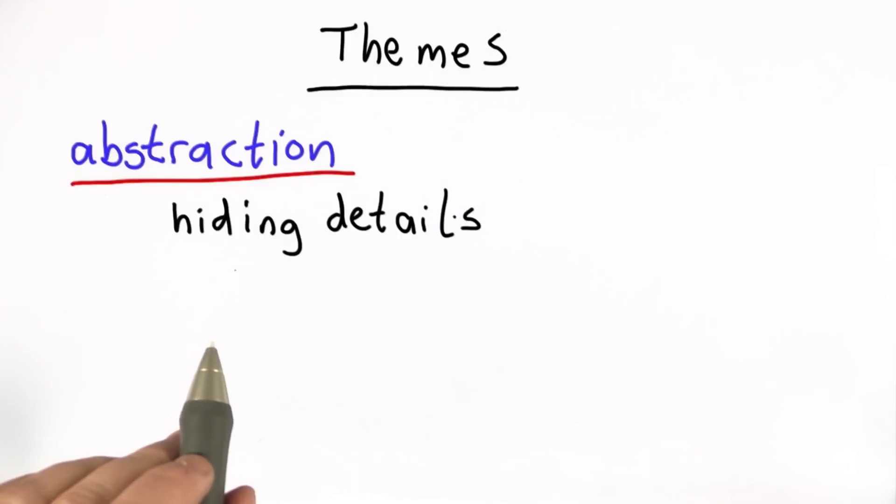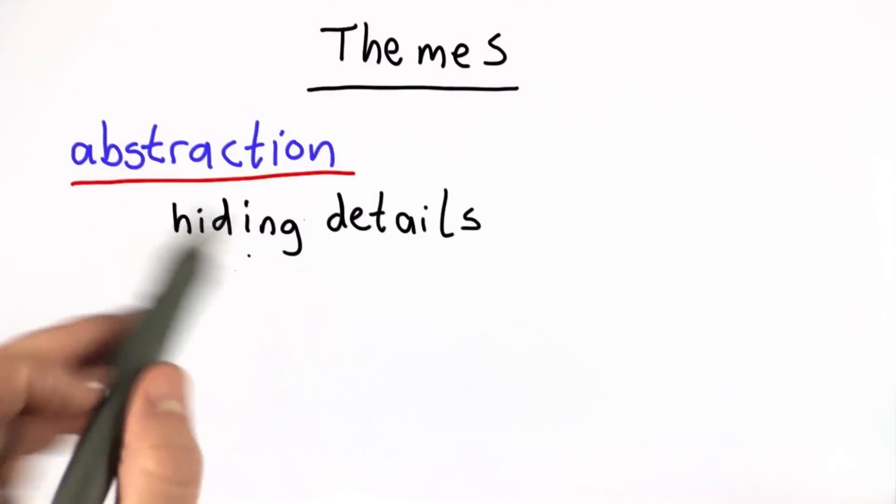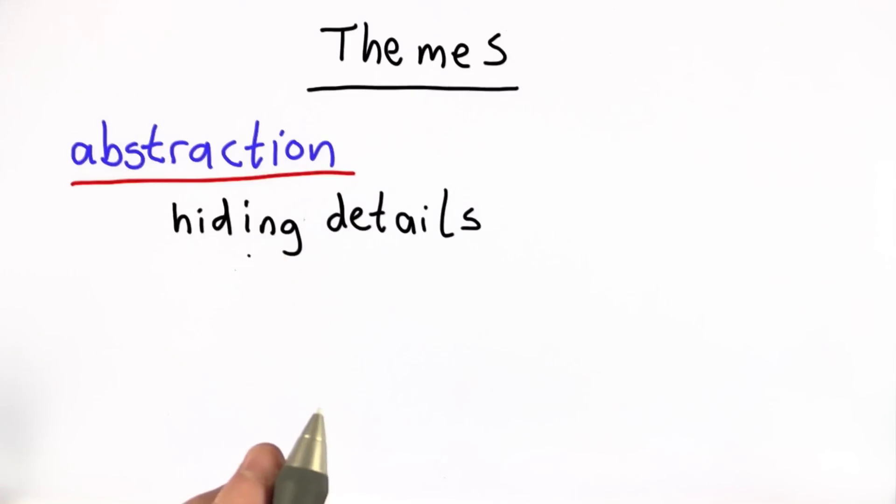And we've seen lots and lots of examples of abstraction in this class. The most important one is procedural abstraction. We can write one procedure, use it to do lots of different things depending on what the inputs are. And when we use that procedure, we don't need to know exactly what sequence of instructions we'll execute. What we know is what the procedure does.